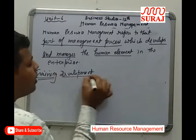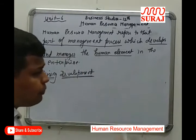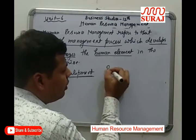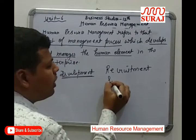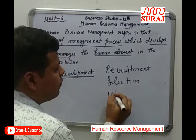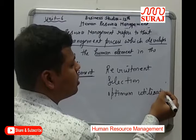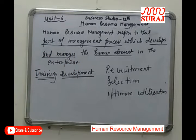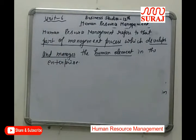With the help of the HR department, we perform various functions in the business organization: recruitment, selection, training, development, as well as optimum utilization of human resources. So, human resource management refers to that part of the management process which develops and manages the human element in the enterprise.